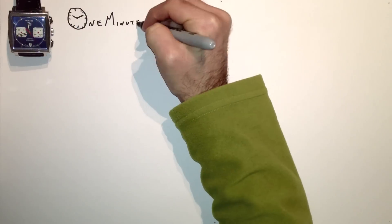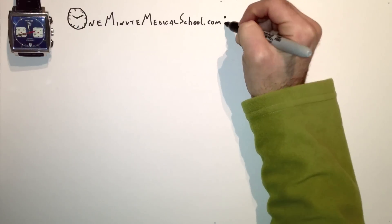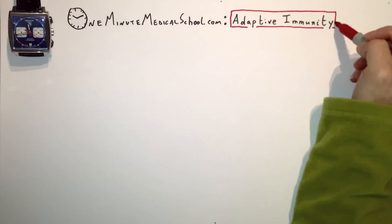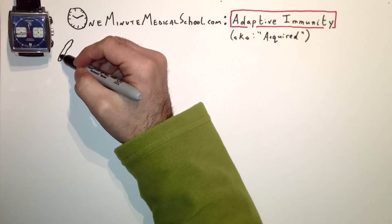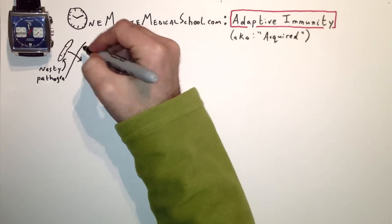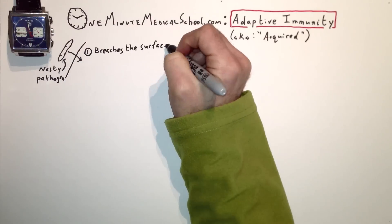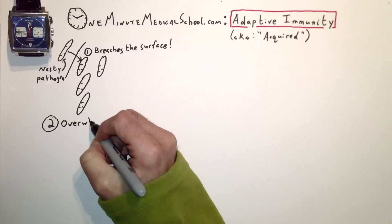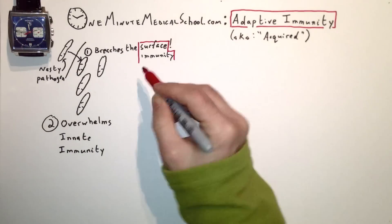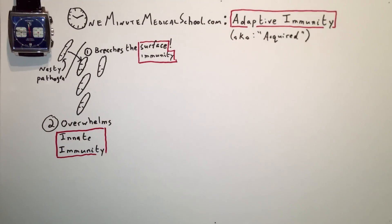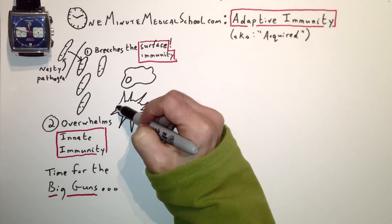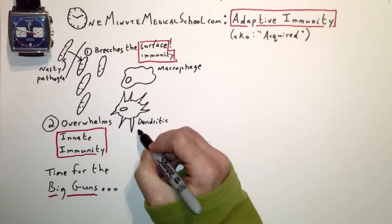Adaptive or acquired immunity is the system that comes online when pathogens breach surface immunity and begin to overwhelm innate immunity. It begins with the antigen presenting cells from innate immunity — the macrophages and dendritic cells — which eat pathogens whole and break them into little protein bits called epitopes to present to T cells.